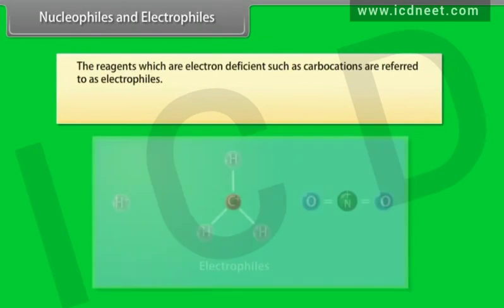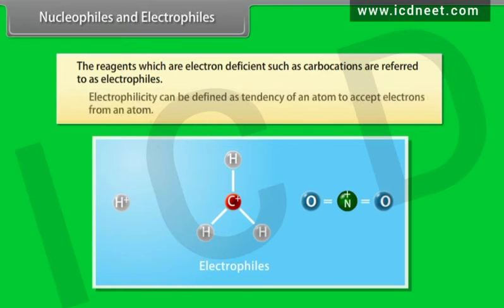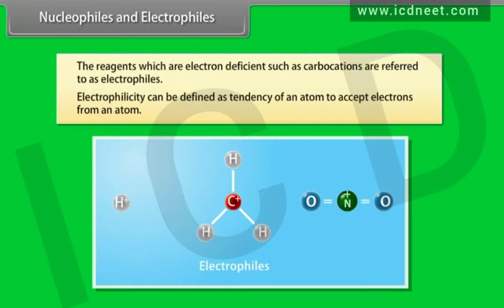The reagents which are electron deficient, such as carbocations, are referred to as electrophiles. Electrophilicity can be defined as the tendency of an atom to accept electrons from an atom.